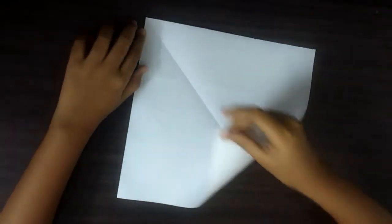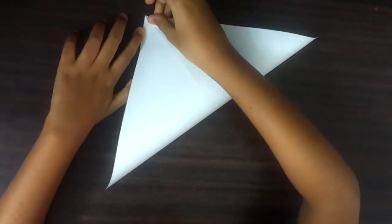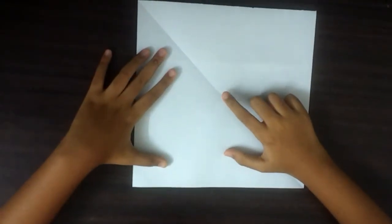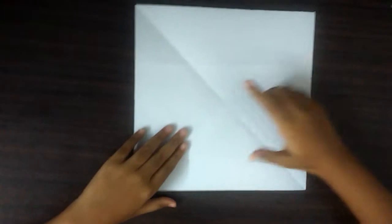Hold at the corner and bring it to the opposite corner and press a crease from the middle. We do this to get a middle point over here.